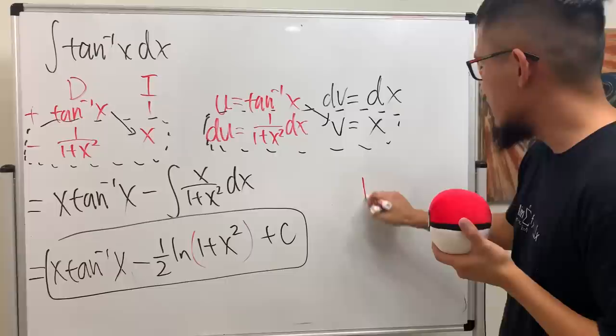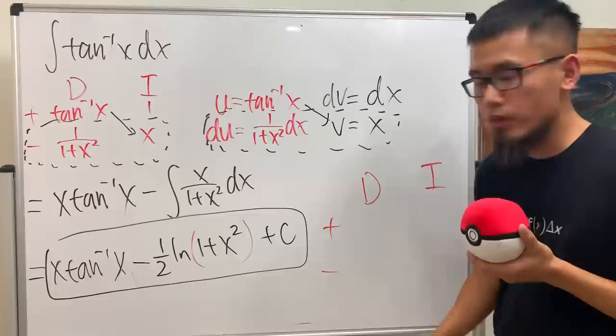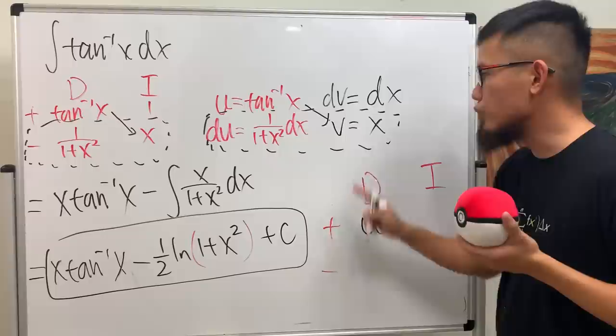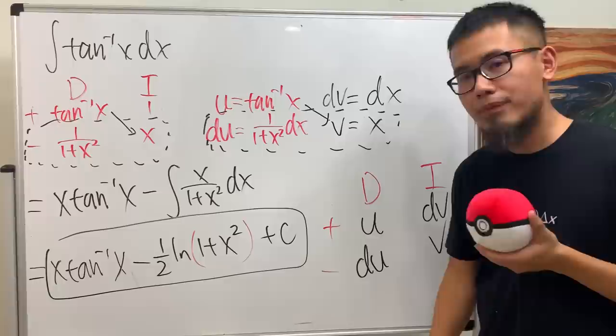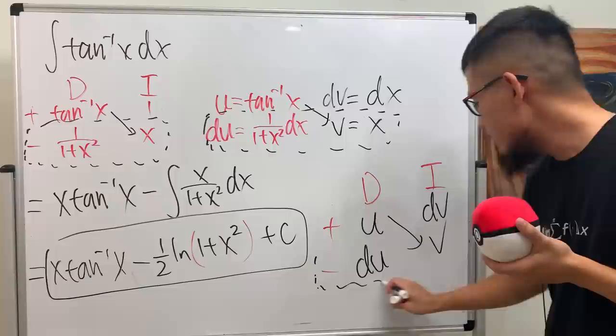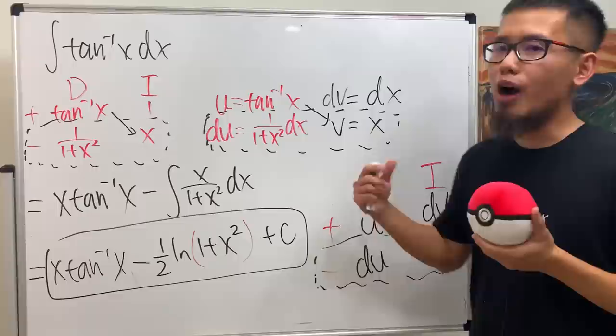So technically, when you have D and I columns with plus and minus, you are picking your U under the D column — just like in the UdV setup. When you differentiate U you get dU, and when you integrate under I you get V. Multiply this and that for the first part of the answer, then minus the integral of V dU. With this, you should see that they are completely equivalent.